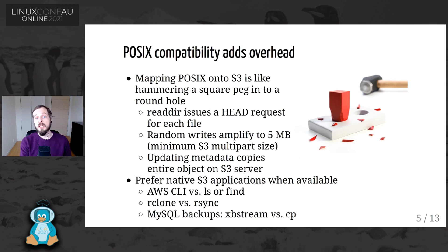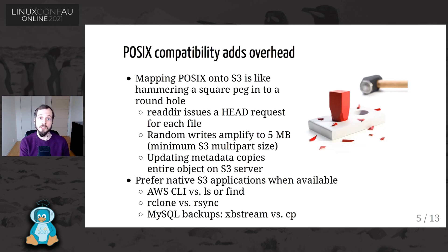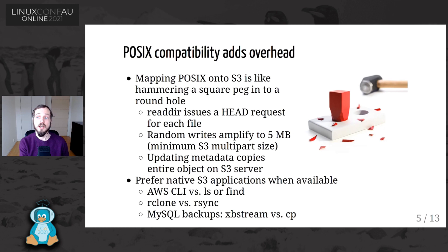The downside of S3FS is that POSIX compatibility introduces overhead you wouldn't have with a native application — like hammering a square peg into a round hole. Readdir is a pretty expensive operation: in addition to issuing a list-objects request, it has to issue a HEAD request for each object to get the stat. This is ruinously expensive for millions of files. Another pitfall is random writes amplify — writing one byte requires S3FS to write five megabytes to satisfy the S3 multi-part upload API requirements. If you're doing lots of small modifications like a database, you will not be happy.